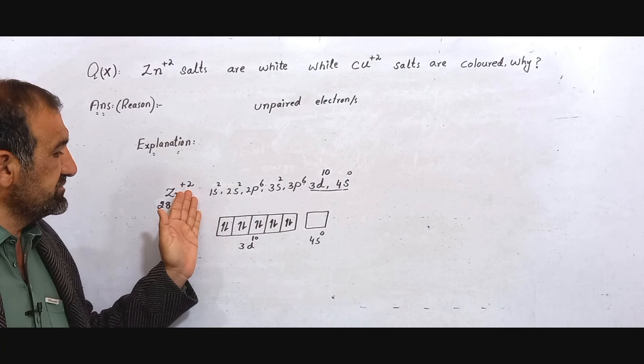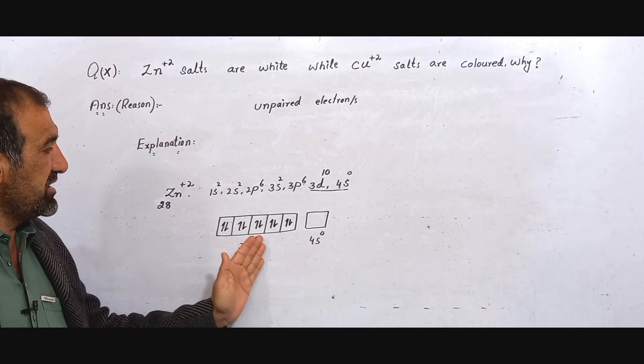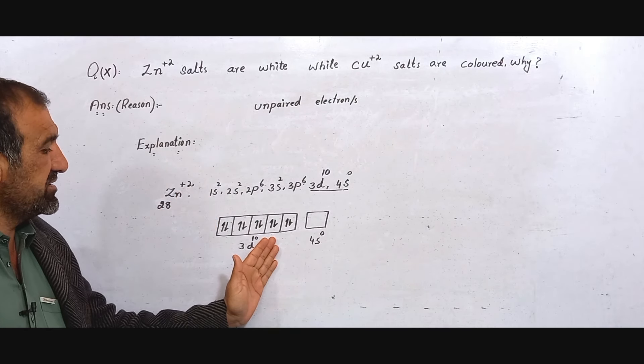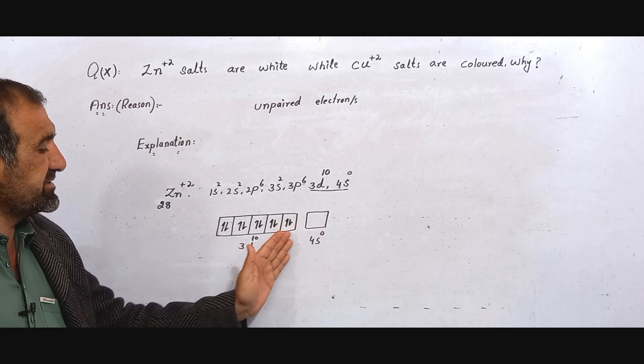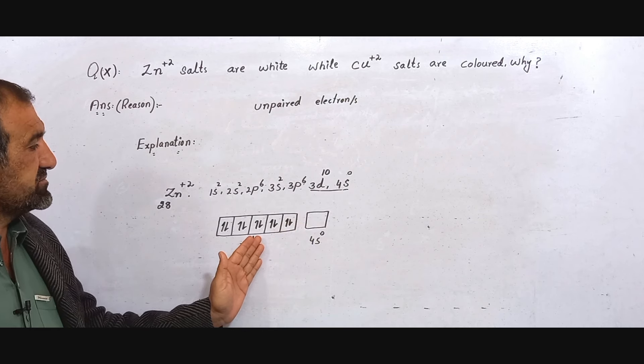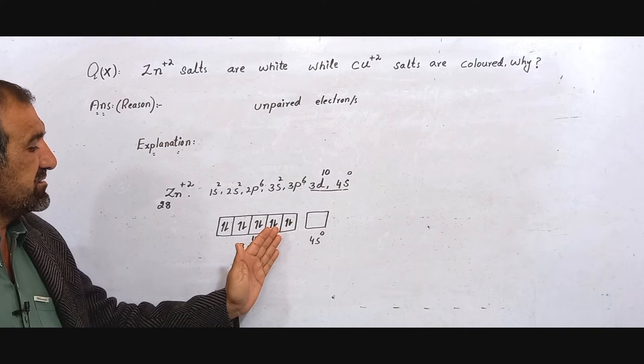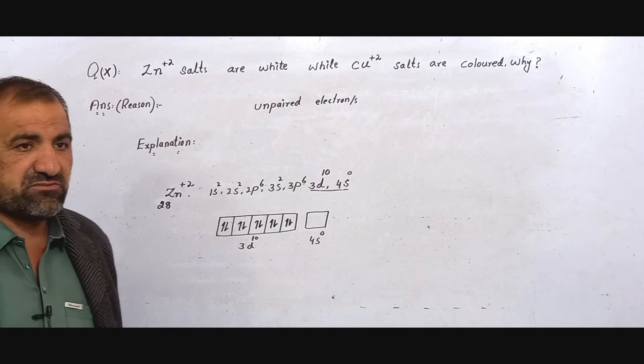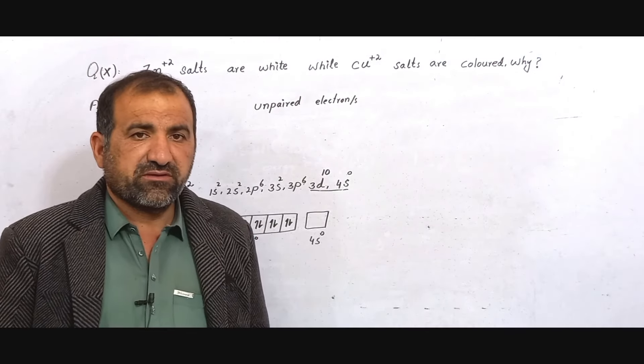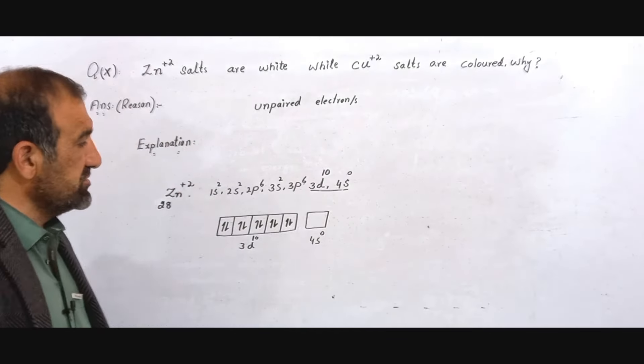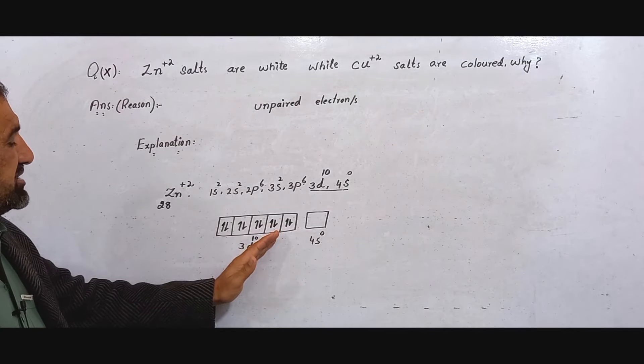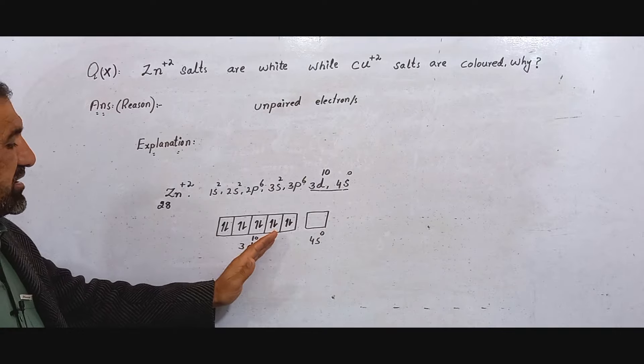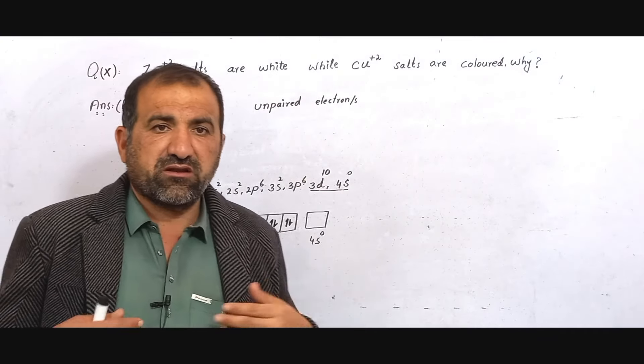Discussing the electronic configuration, look at here. In Zn²⁺ there is no unpaired electron in the valence shell. So when visible light falls on it, it cannot absorb any color and all colors pass without any absorbance. Thus it gives no complementary color.